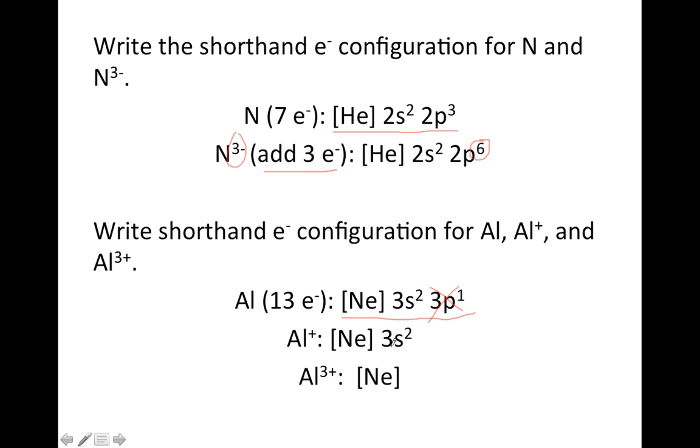Then if I want to make it 3+, I need to remove two more electrons to make it 3+. So at that point you can get rid of the valence S electrons, so Al³⁺ ends up being [Ne] in brackets.